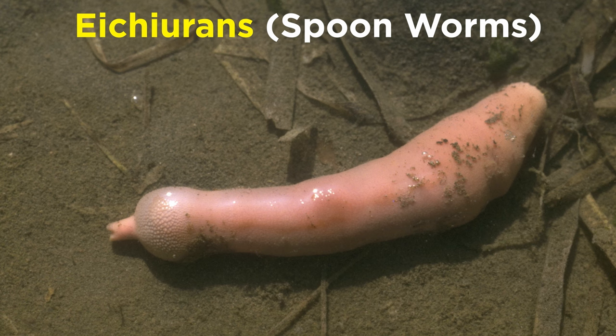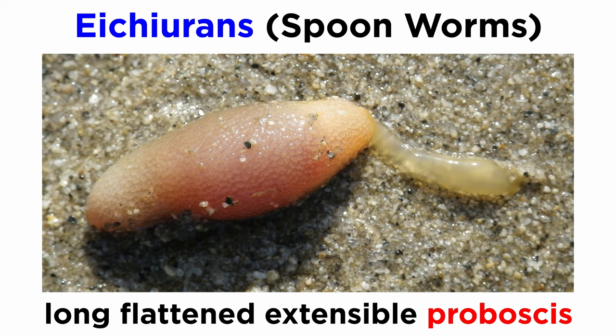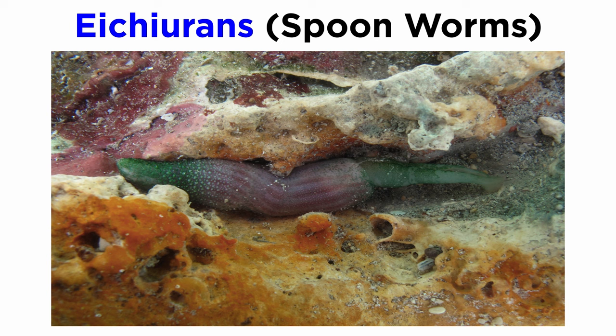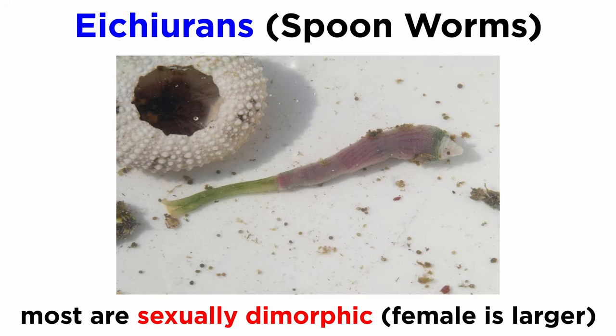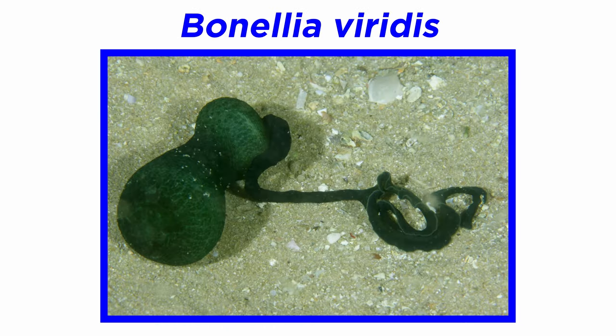The last sedentary group of polychaetes we will cover are the Echiurans, or spoonworms, that were also once considered to be a separate phylum. They are found in all oceans, but most commonly in warmer waters. They are cylindrical with a long-flattened extensible proboscis which cannot be fully retracted. Most live buried in the sand or tucked away in a rocky crevasse, with proboscis extended, searching or waiting for food. Most species also exhibit sexual dimorphism, where the female is often much larger. In some species, like those of genus Bonellia, the male is considerably smaller than the female and lives on or in her body.